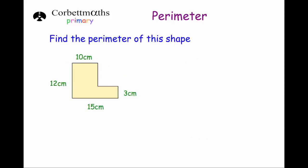Our second last example — this time we've got an L-shape, and some of the sides are missing. We need to find the perimeter, which is the total distance around the outside. Going around, we have 10, 12, 15, three — but we've got two sides that are missing. So before we can find the perimeter, it's very important that we find the missing sides first.